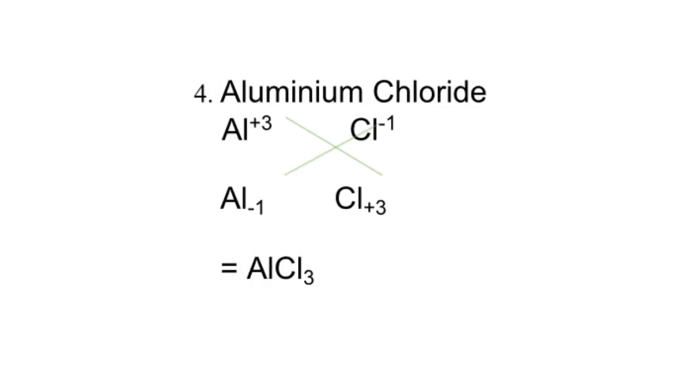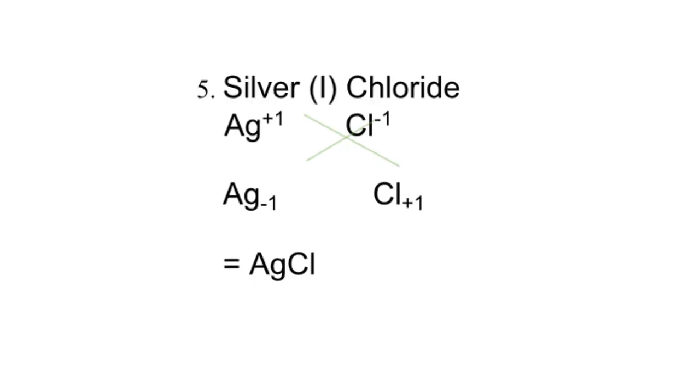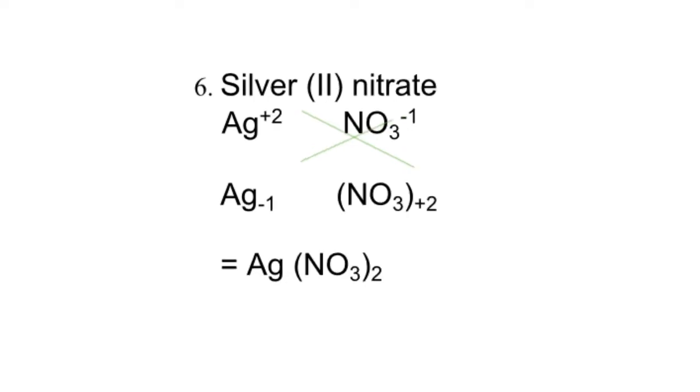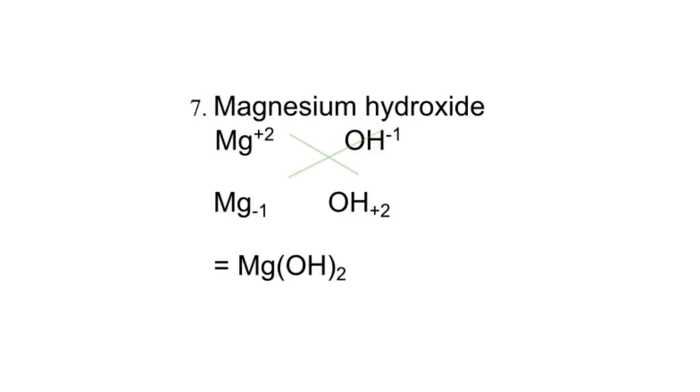Aluminum chloride: Al plus three, Cl minus one, so the formula is AlCl3. Silver chloride: Ag plus one, Cl minus one - cancelling out so the formula is AgCl. Silver nitrate: Ag plus one and nitrate is minus one, so AgNO3. For silver with valency plus two, it would be Ag(NO3)2.